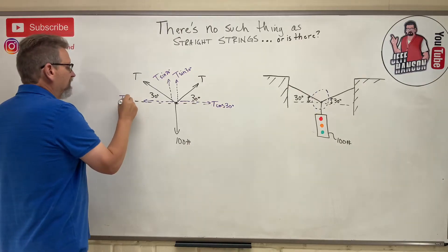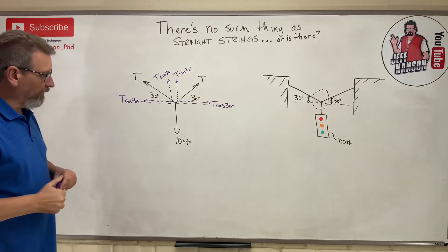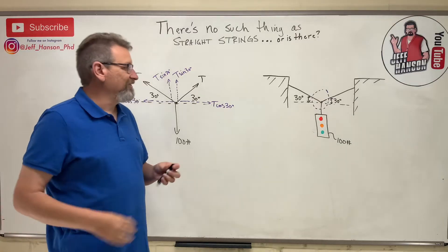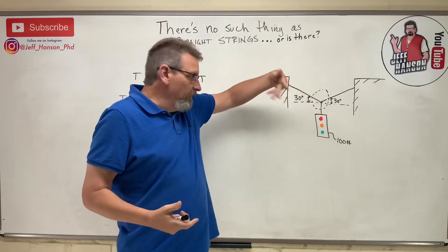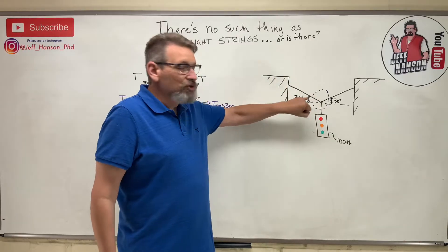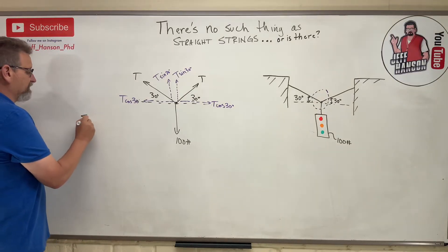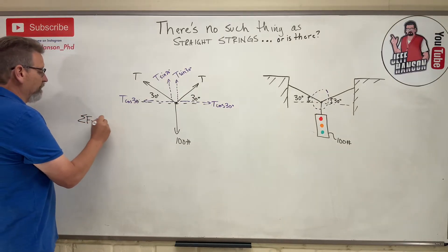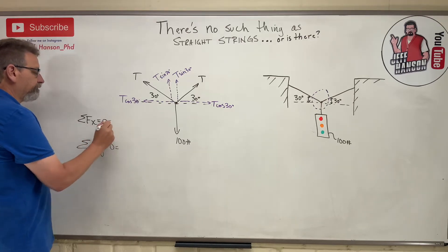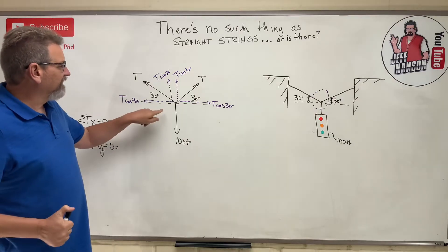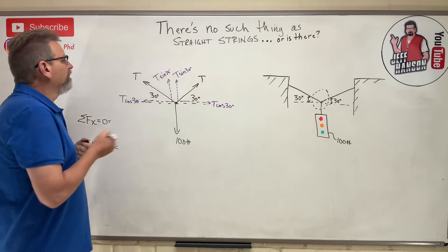This traffic light is in equilibrium - it's just hanging there, it's not moving. Well if you live where I live the wind would be blowing it around, but we're assuming it's not moving. So what has to be true? That means that the sum of the forces in the x have to be zero and the sum of the forces in the y have to be zero.